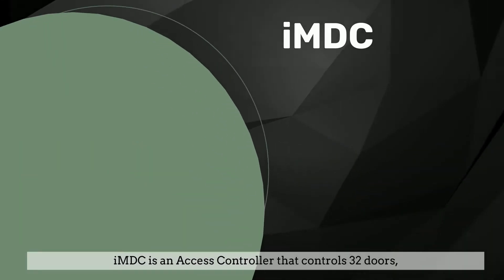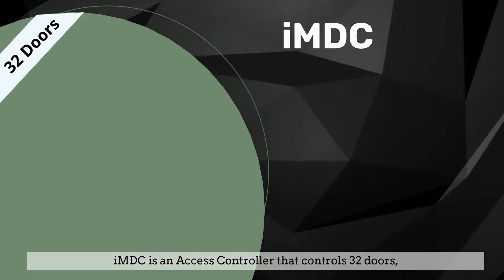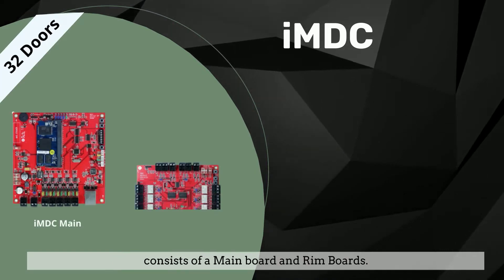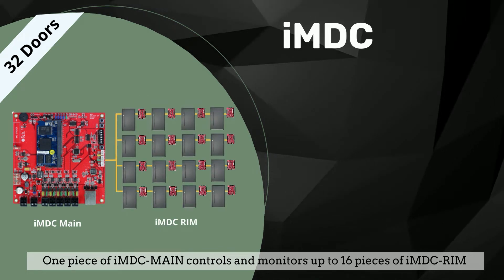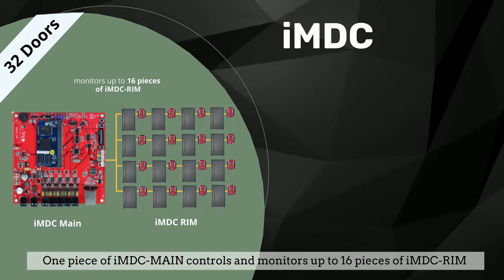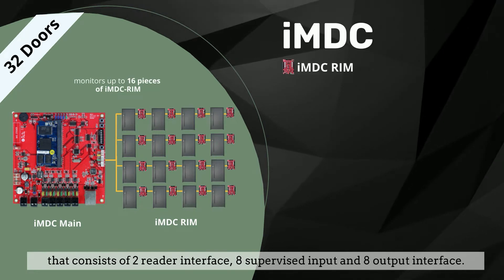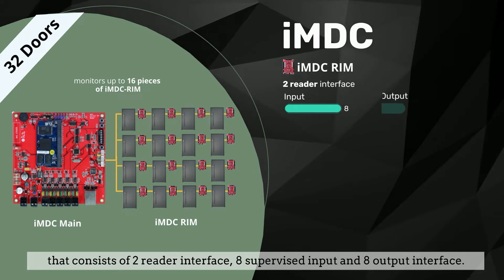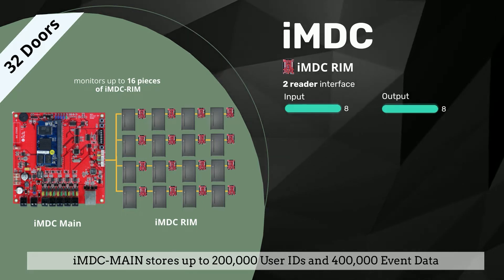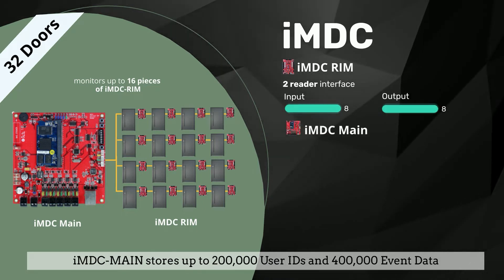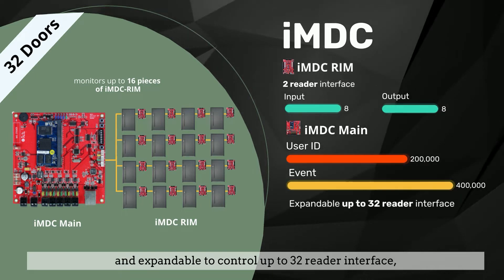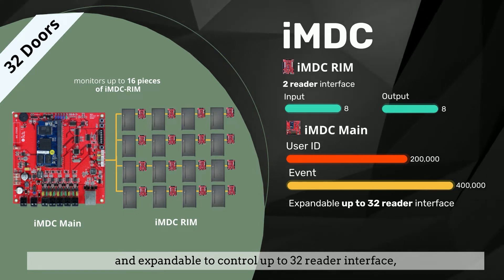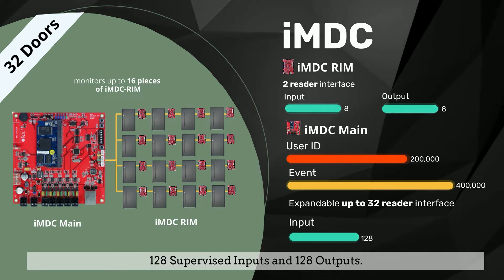IMDC is an access controller that controls 32 doors, consisting of a main board and rim boards. One piece of IMDC main controls and monitors up to 16 pieces of IMDC rim, each consisting of 2 reader interfaces, 8 supervised inputs, and 8 output interfaces. IMDC main stores up to 200,000 user IDs and 400,000 event data, and is expandable to control up to 32 reader interfaces, 128 supervised inputs, and 128 outputs.